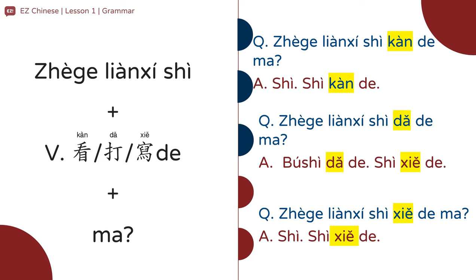这个练习是看的吗? Is this reading practice? 是看的。 Yes, it's reading practice. 这个练习是打的吗? Is this typing practice? 不是打的，是写的。 It's not typing practice — it's writing practice. 这个练习是写的吗? Is this writing practice? 是，是写的。 Yes, it's writing practice.